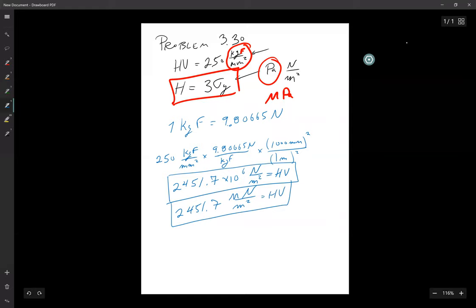So we can then say the yield stress is equal to one third HV. Oops, one third, sorry. Is equal to 817 MPa.